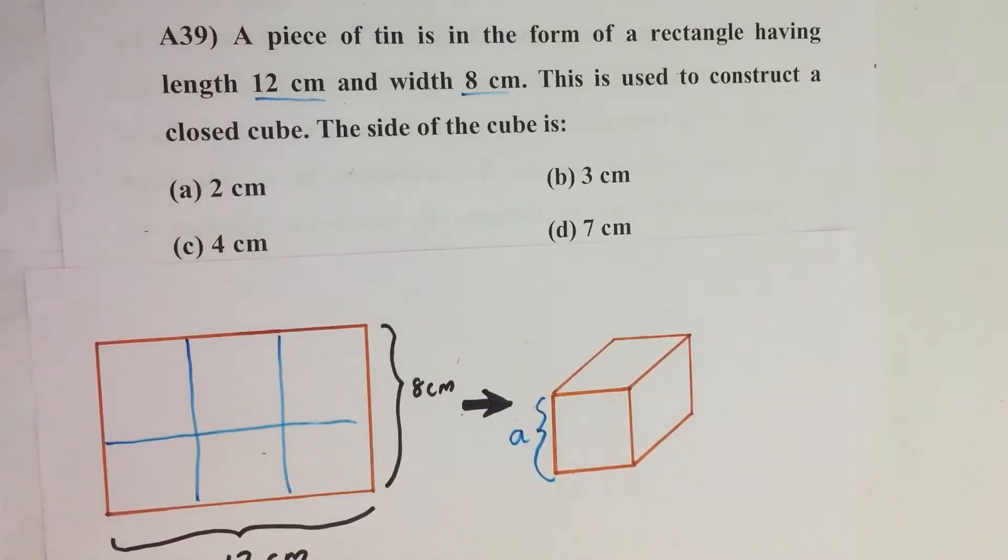A piece of tin is in the form of a rectangle having length 12 cm and width 8 cm. This is used to construct a closed cube. The side of the cube is...